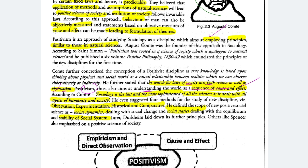You look at cause and effect in scientific experiments — for example, you are boiling water (cause) and it evaporates (effect) — and you apply those things in your study of society. Sociology is the last and most sophisticated of all sciences. Comte gave four methods for the study of this new discipline: observation, experimentation, historical and comparative methods. Historical means looking at how old societies have evolved; comparative means cross-sectional, cross-cultural, cross-societal studies — comparing one society with another.